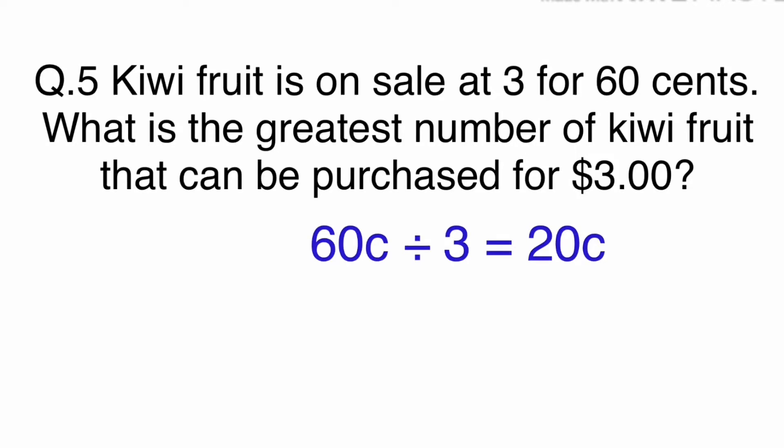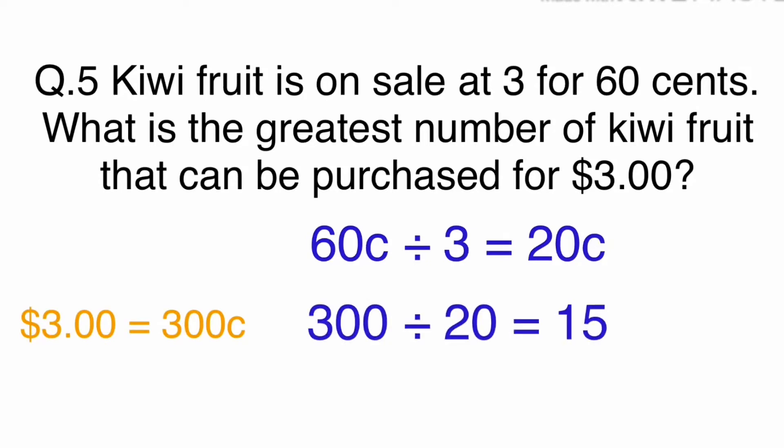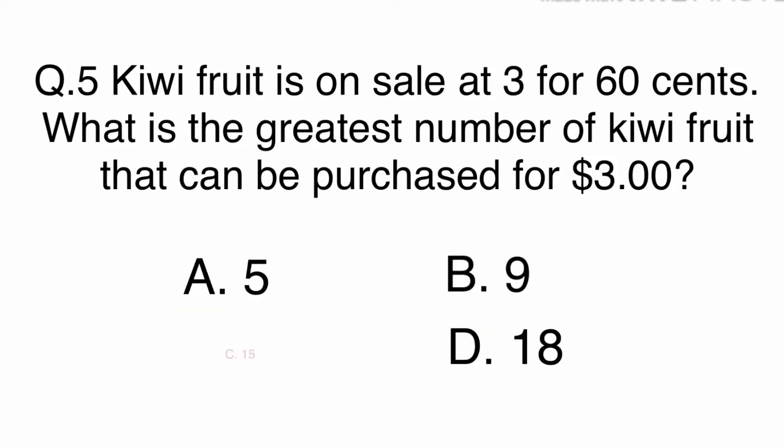If 3 kiwis are 60 cents, that means 1 kiwi is 20 cents. When you calculate money, you need to match the units. Let's change $3 to 300 cents to match 20 cents. 300 divided by 20 equals 15. The answer is C. 15.